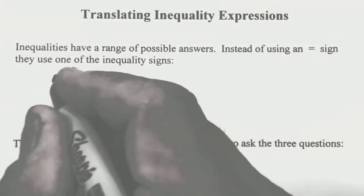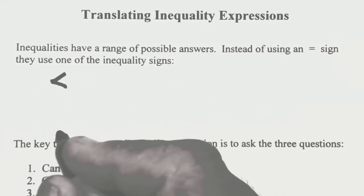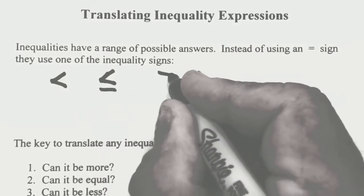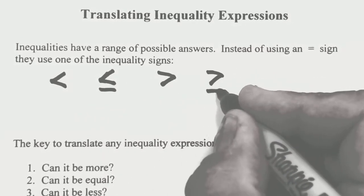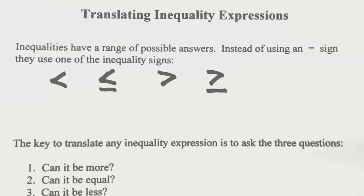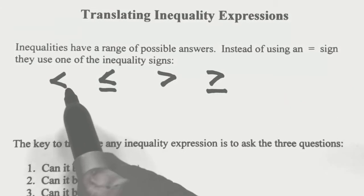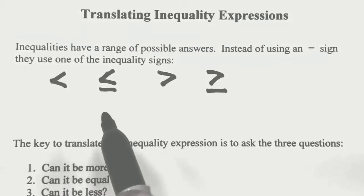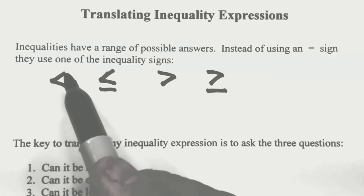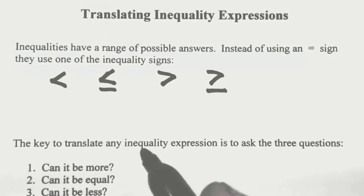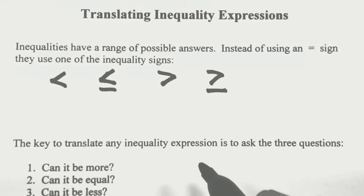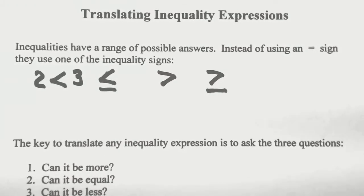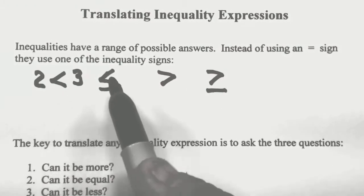Let's remind you what all of those are. There is the less than sign, the less than or equals sign, the greater than sign, and the greater than or equal sign. One thing that's nice to remember about how these inequalities work: they're basically a sideways V, and there's always a small side and a large side. The small number goes on the small side, and the large number goes on the large side.